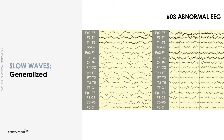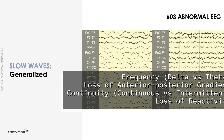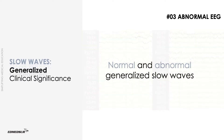Indicators of severity of generalized slow waves include frequency, loss of anterior-posterior gradient, continuity, and loss of reactivity.